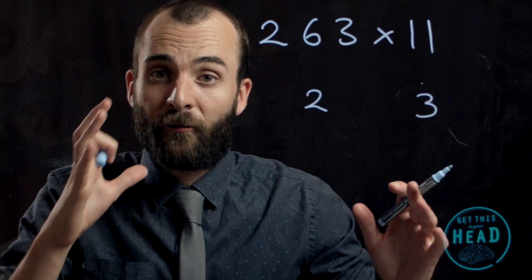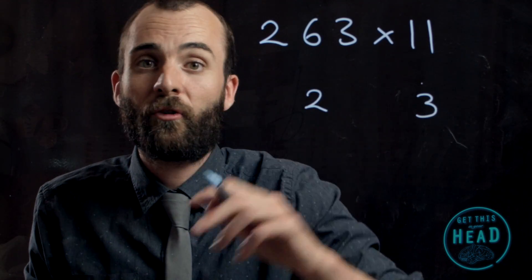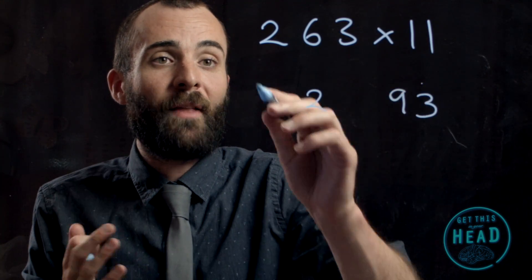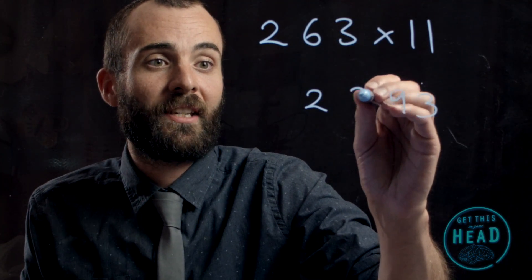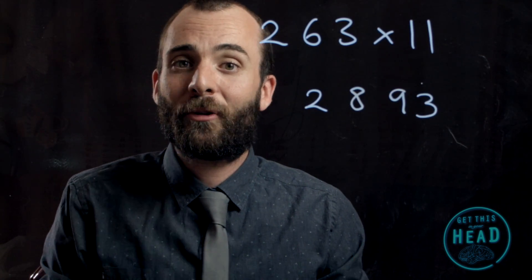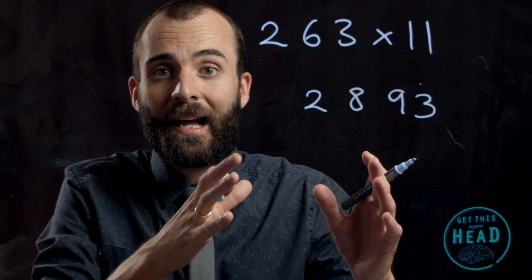Now, instead of adding the last and first numbers together, we simply add the pairs of numbers together to fill those two remaining spaces. The 6 and the 3 add together to give us 9, and the 2 and the 6 add together to give us 8. So it would be 2893.